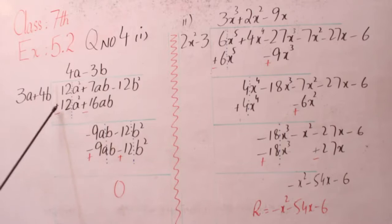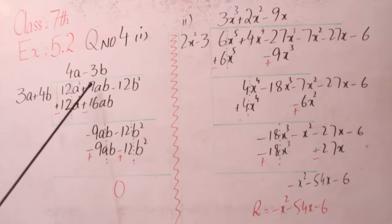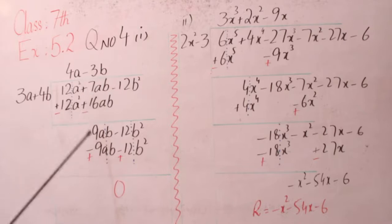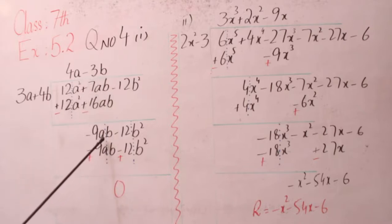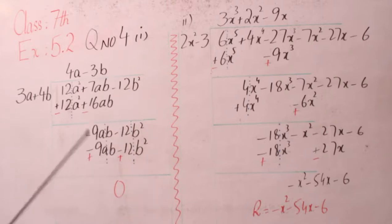کیونکہ sign change کریں، دونوں plus ہیں دونوں minus ہوں گے۔ یہ plus minus ہو کے ختم ہو گیا 12a² اور 12a² کے ساتھ۔ لیکن یہاں بڑی value کا sign minus کا ہے، بڑی value سے چھوٹی value نکالیں: 16 سے 7 نکالیں تو minus 9ab ساتھ لکھ دیا، اوپر سے minus 12b² کو نیچے لکھ دیا۔